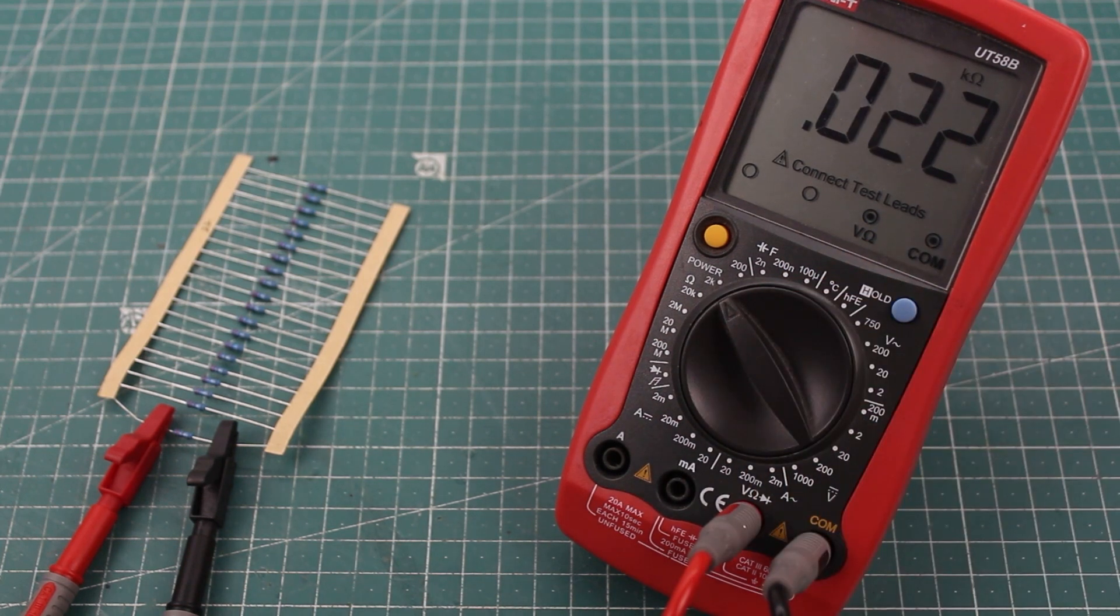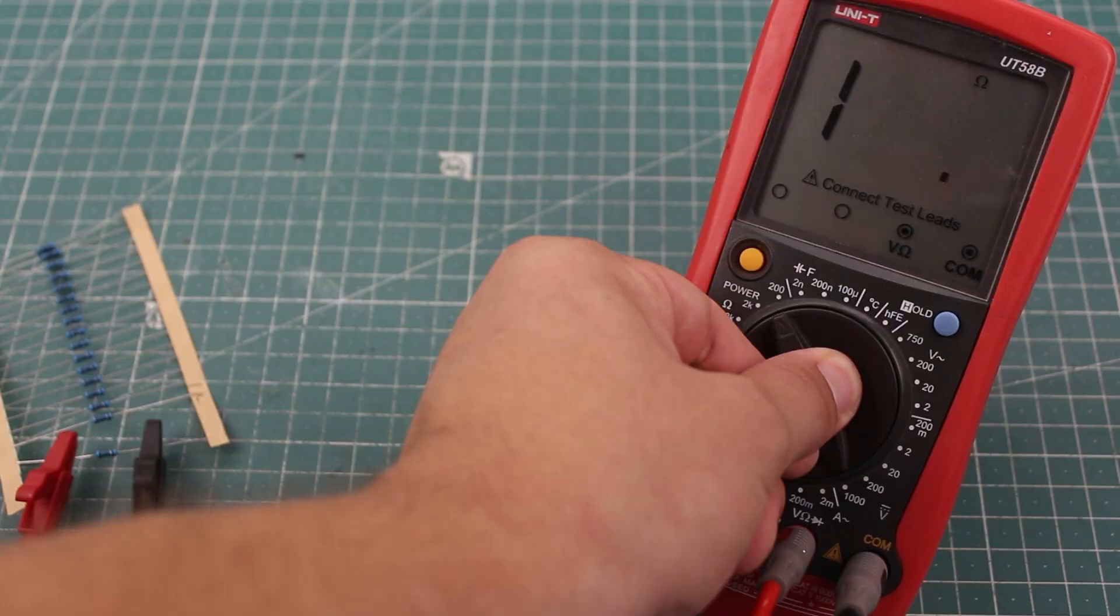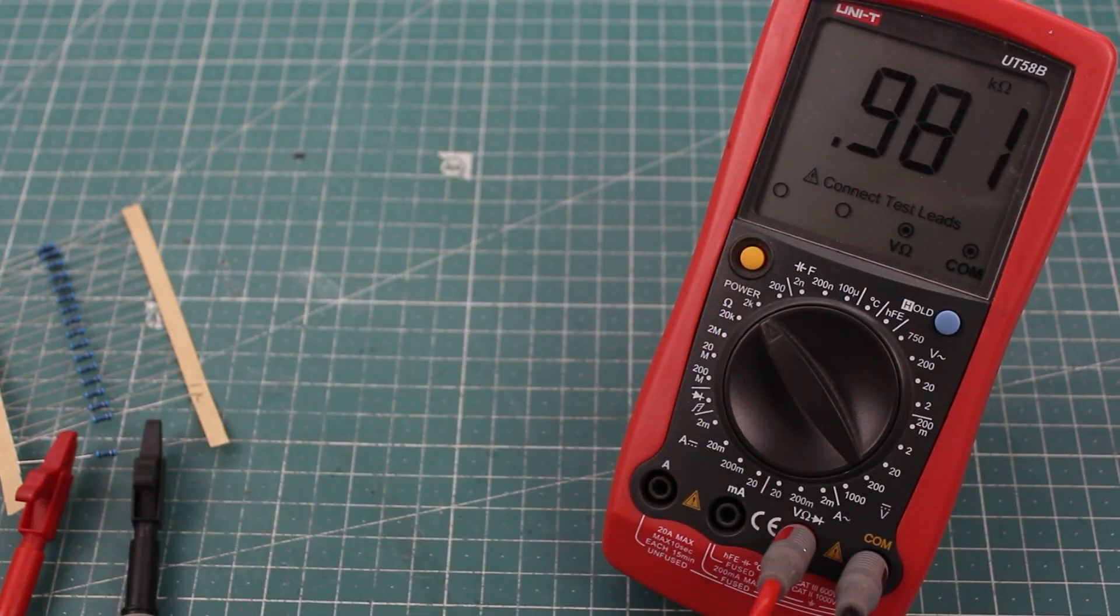If I go higher and select the 2k range, you can see how we lost precision. The next resistor is 1 kilo ohm, and the best range for it would be the 2k one.